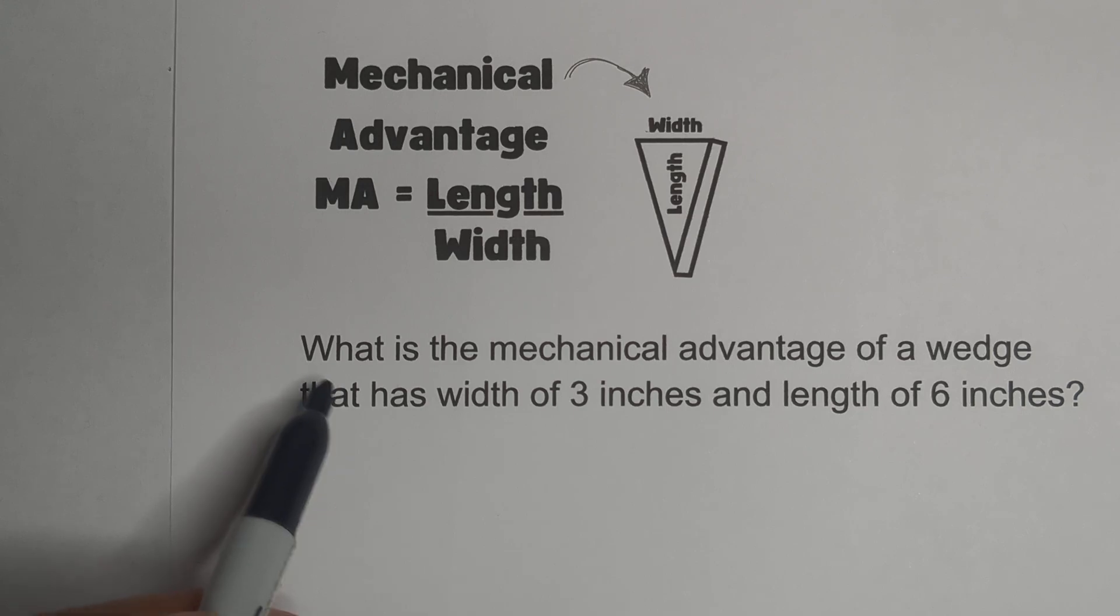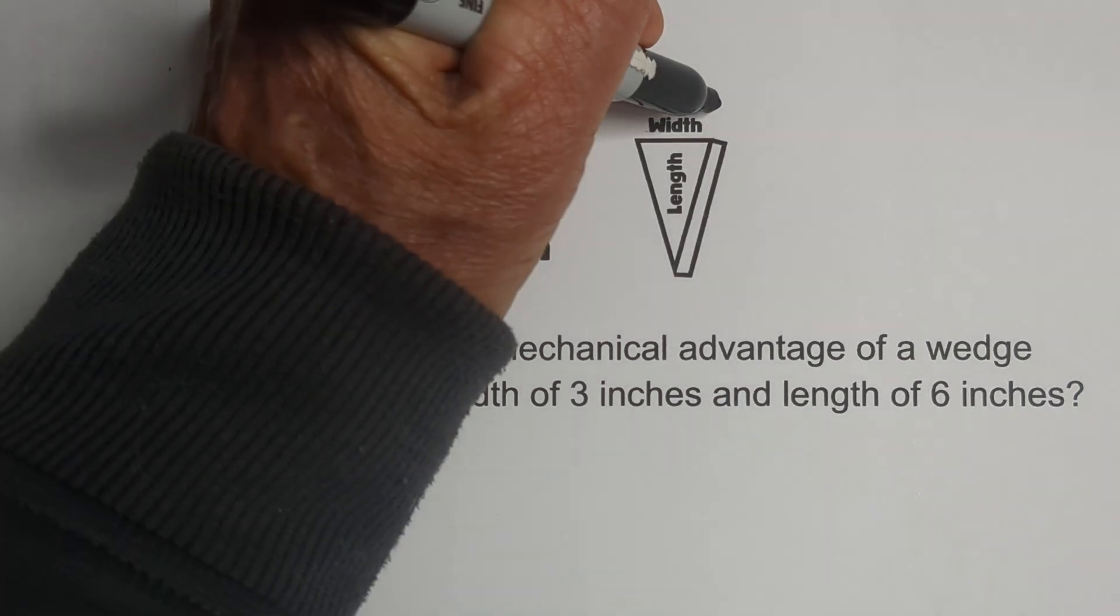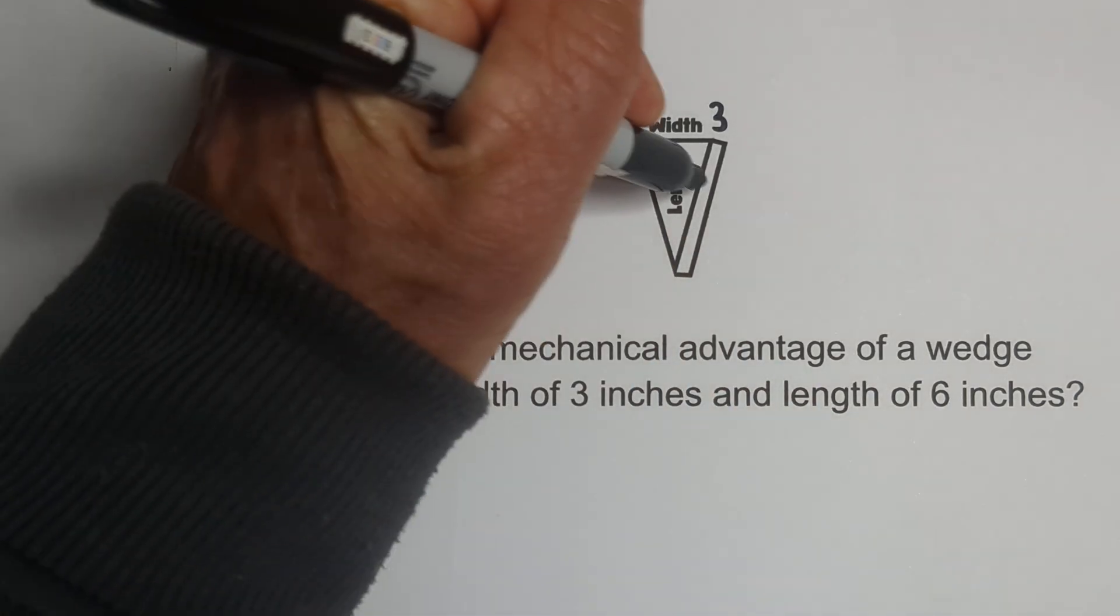So here's an example. What is the mechanical advantage of a wedge that has a width of 3 inches and a length of 6 inches?